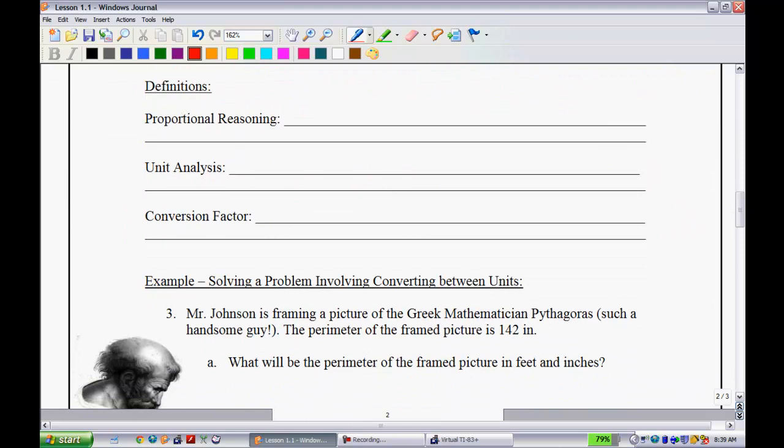A couple definitions. Proportional reasoning is the ability to understand and compare quantities that are related through multiplication or division. That was the method that we used on the other page.